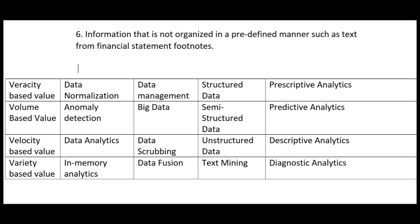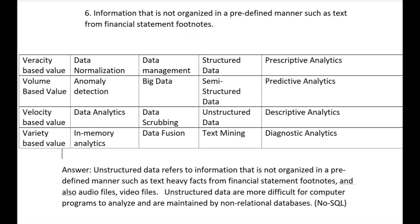Number six: information that is not organized in a predefined manner, such as text from financial statement footnotes. Footnotes are not typically organized in a predefined manner the way a balance sheet is. This would be unstructured data. Unstructured data is more difficult for computer programs to analyze and is maintained by non-relational databases known as NoSQL.